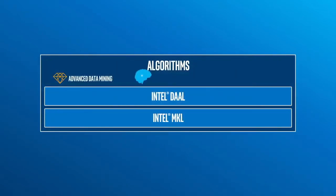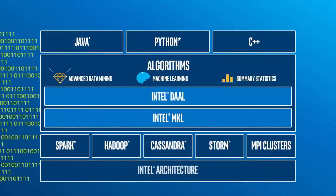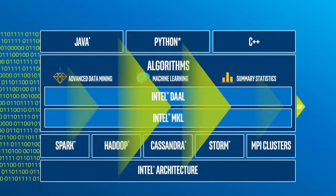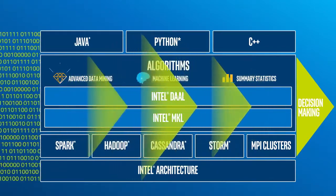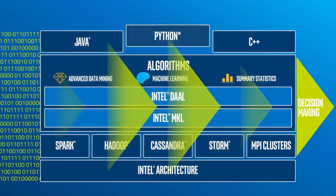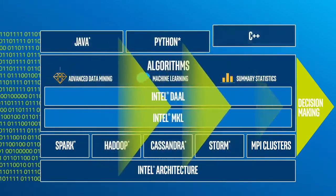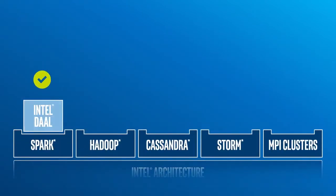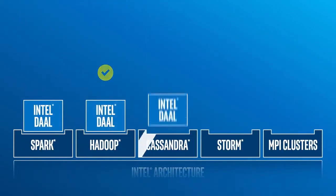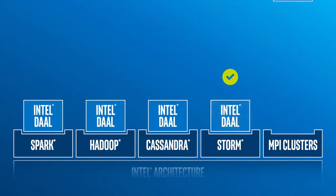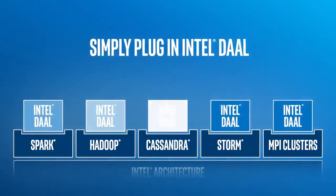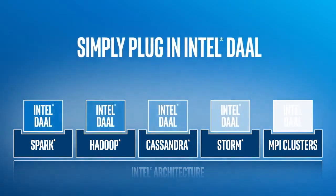These libraries offer fast, ready-to-use algorithms for everything from basic data analysis to machine learning. Each of the Intel DAAL building blocks includes your choice of language API, including Java, Python, and C++. Intel DAAL functions can be called from within any big data framework and they can work with any communication scheme — simply plug in Intel DAAL and it'll start working right away.